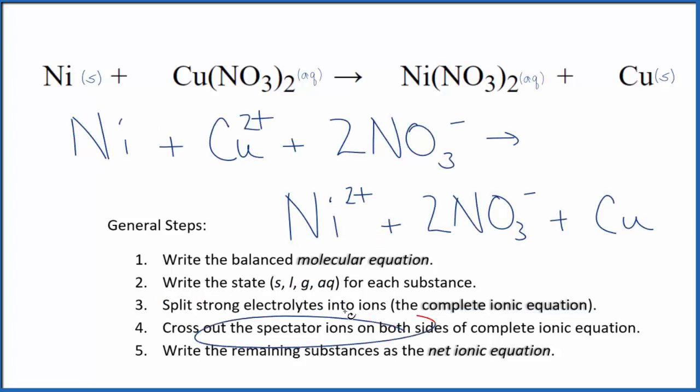Once we have that, we cross out spectator ions. They're the same on both sides. In the reactants, I have these two nitrate ions here. I also have them in the products. So these are spectator ions. Get rid of those.